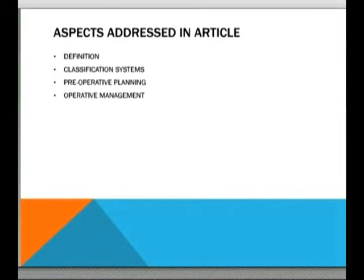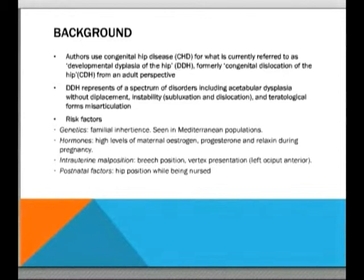By way of background, I'll turn to the textbooks. The authors use 'congenital hip disease' as a term for what we currently refer to as developmental dysplasia of the hip — a relatively new term, formerly known as congenital dislocation of the hip. The use of 'congenital hip disease' puts an adult perspective on what is largely discussed as a paediatric condition. In the child, DDH represents a spectrum of disorders including acetabular dysplasia without displacement, instability, subluxation, and dislocation, including teratological forms of misarticulation.